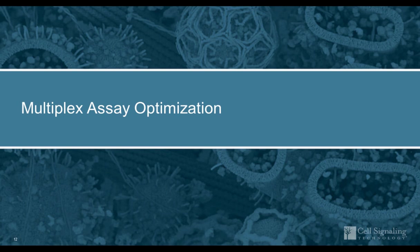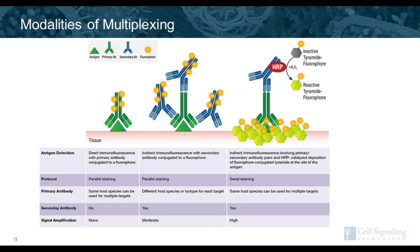Now I want to get into the optimization of a multiplex IHC assay, which is fluorescent-based. There are a number of ways to attempt multiplexing in IHC. The first approach uses directly conjugated primary antibodies, which allows antibodies raised in the same species to be used, but has drawbacks in FFPE tissues. FFPE tissues generally generate a high amount of autofluorescence, and using directly conjugated primary antibodies provides very little amplification, so in most cases signals will not be sufficient to overcome the autofluorescence.